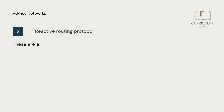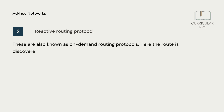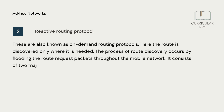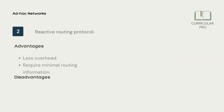Number 2, reactive routing protocol. These are also known as on-demand routing protocols. Here the route is discovered only where it is needed. The process of route discovery occurs by flooding the route request packets throughout the mobile network. It consists of two major phases, namely route discovery and route maintenance.